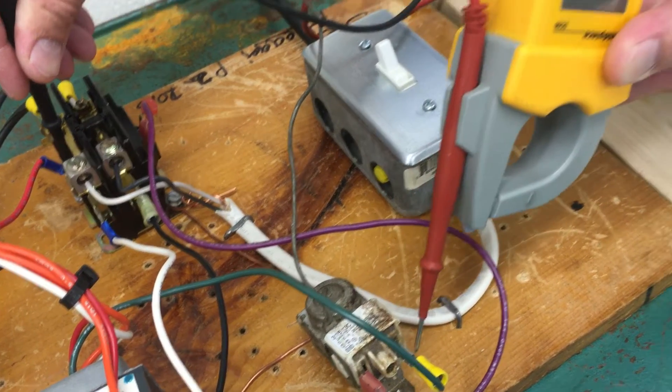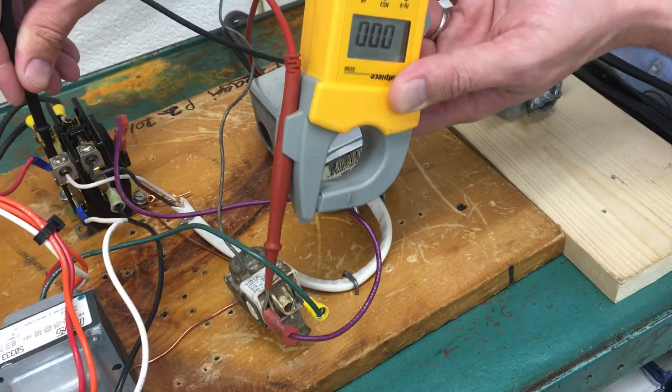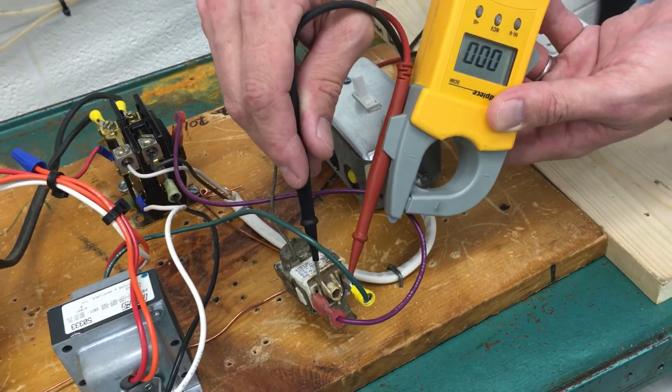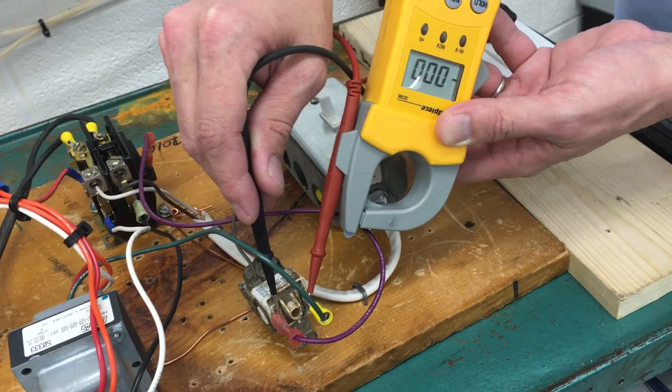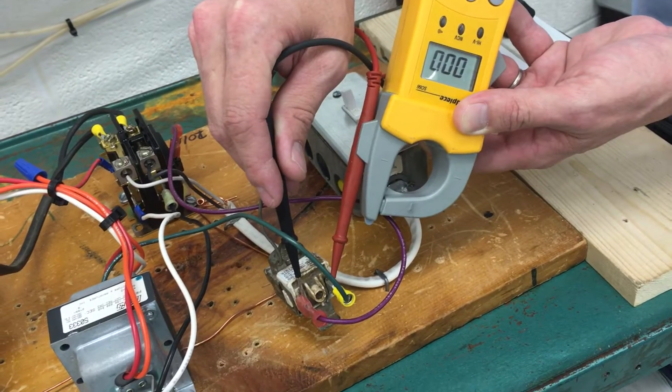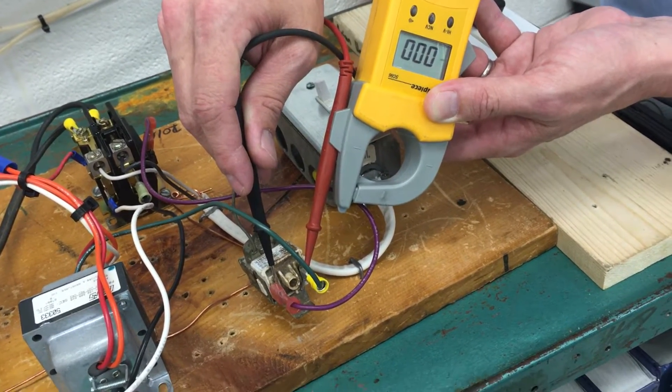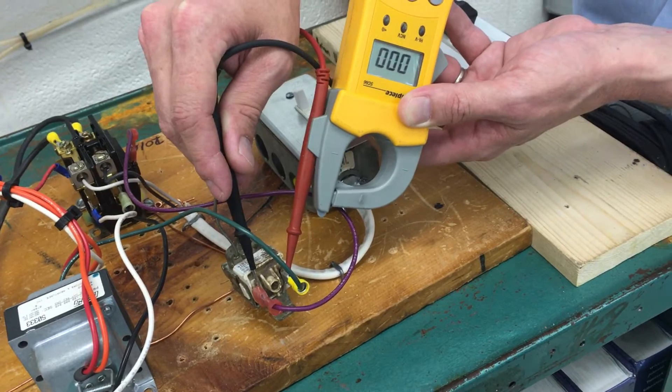Now I'm getting 24 volts because I've got a difference in potential, but if I measure both of them on the same leg with the thermostat energized, it'll show zero voltage. But again, that's not true. There really is 24 volts flowing through there, but I don't have a difference in potential.